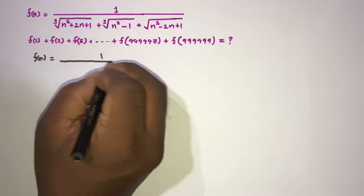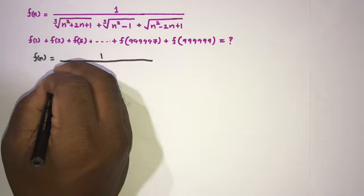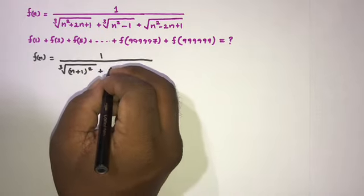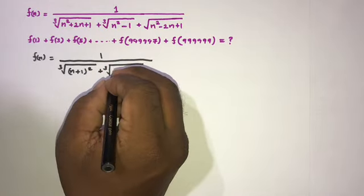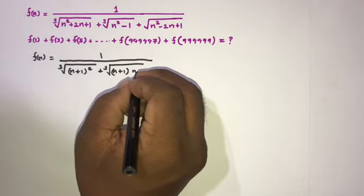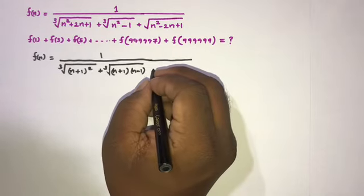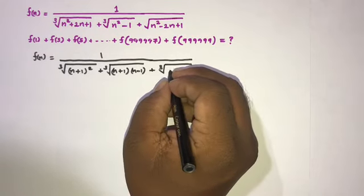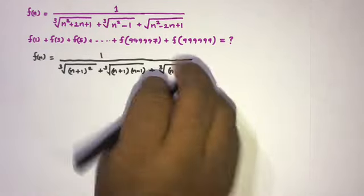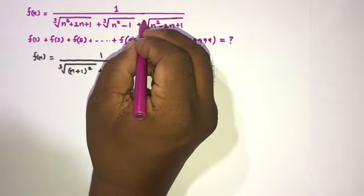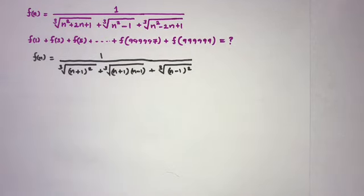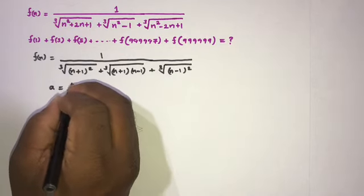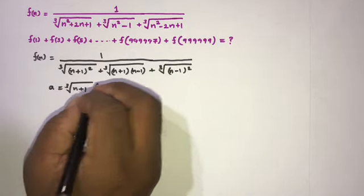We can write f(n) as 1 over the quantity: cube root of (n+1)² plus cube root of (n+1)(n-1) plus cube root of (n-1)². Then I am going to make a substitution: let a equal the cube root of (n+1) and b equal the cube root of (n-1).